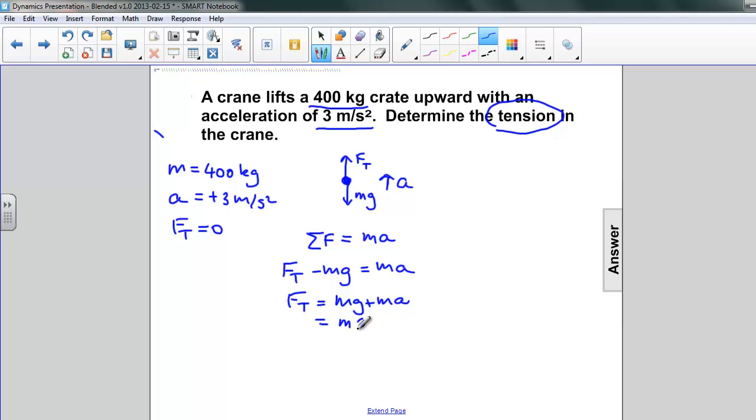my acceleration terms together just to simplify my calculations. Then I'll make the substitutions. Mass 400 kilograms, g is 9.8,